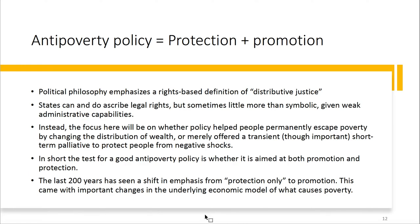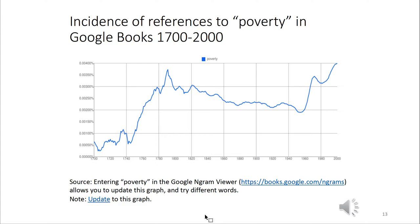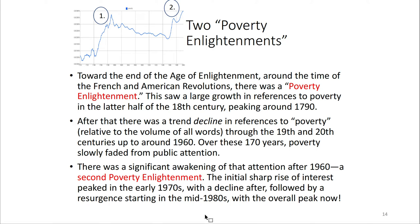When you look at references to poverty in books on Google Books from 1700 to 2000, poverty peaked around 1800, dropped off, and then right around 1960 we started the war on poverty in the United States. After that, we started viewing poverty as a social bad rather than a necessary evil. This poverty enlightenment goes back to around 1790, and especially the 1960s when we had the war on poverty under President Lyndon Baines Johnson.